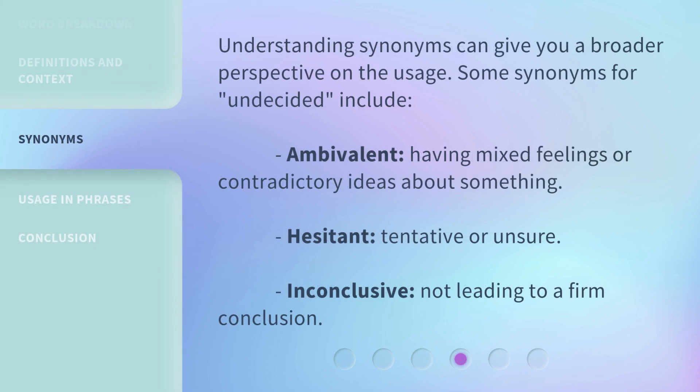Understanding synonyms can give you a broader perspective on usage. Some synonyms for undecided include: 'ambivalent,' meaning having mixed feelings or contradictory ideas about something; 'hesitant,' meaning tentative or unsure; and 'inconclusive,' meaning not leading to a firm conclusion.